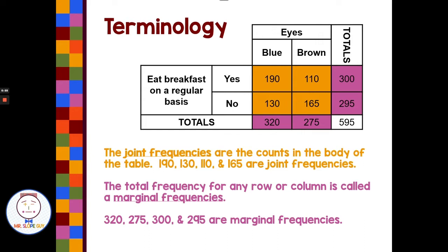Now, the total frequency for any row or column is called a marginal frequency. So marginal frequency is where we add up a column like blue eyes to 320 or brown eyes to 275, or we add up a row, 190 plus 110 was 300 that said yes to breakfast on a regular basis. So these are called marginal frequencies. And they're where we add up our rows and columns around the margins. So joint frequencies in the middle, marginal frequencies where we add up columns and rows.